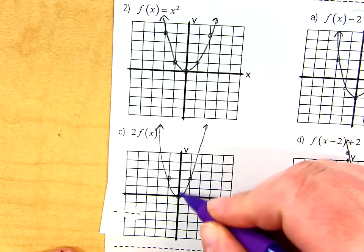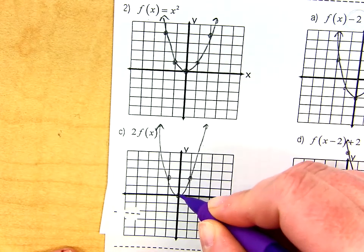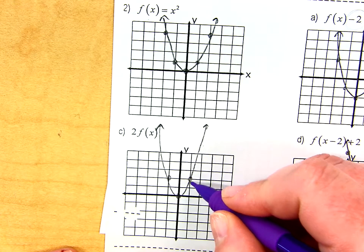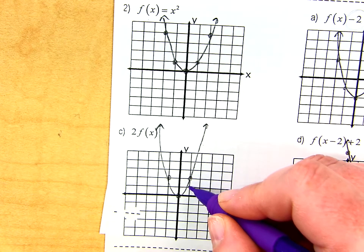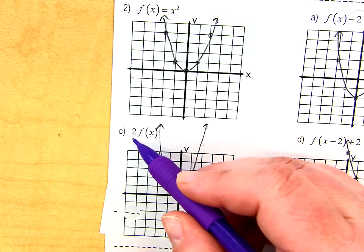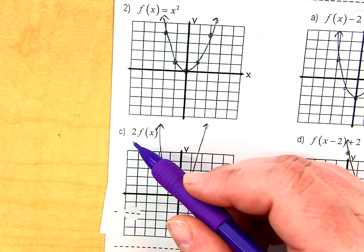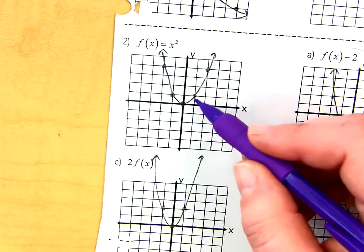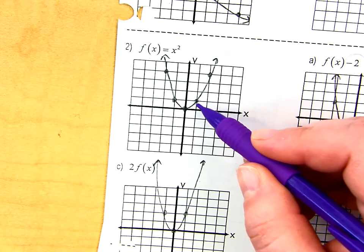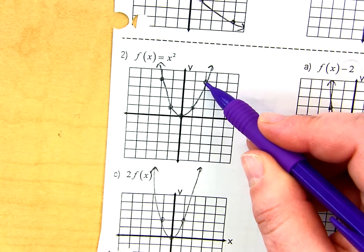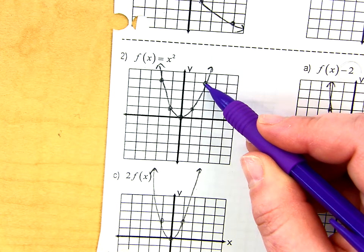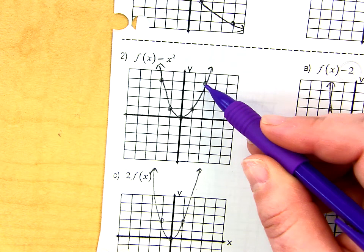So double check that you have some of these key points. You should still be at 0, 0, and then you should be at 1, 2. Right? Because normally I'd be at 1, 1. So when I have something like this, I'm multiplying the y values by 2. So this y value of 1 now becomes a y value of 2. This y value of 4 now becomes